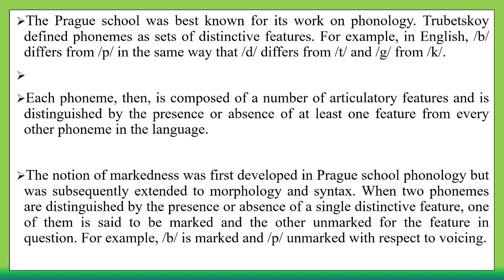The notion of markedness was also first developed in Prague School phonology, but was subsequently extended to morphology and syntax. When two phonemes are distinguished by the presence or absence of a single distinctive feature, one of them is said to be marked and the other unmarked for the feature in question. For example, 'b' is marked and 'p' is unmarked with respect to voicing — 'b' is marked for voicing and 'p' is unmarked for voicing.